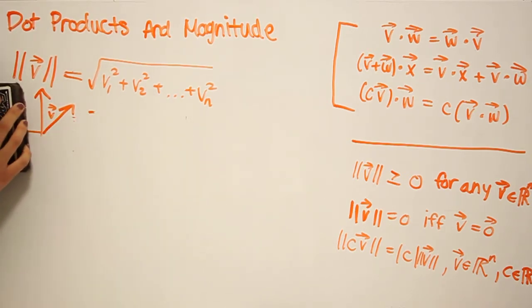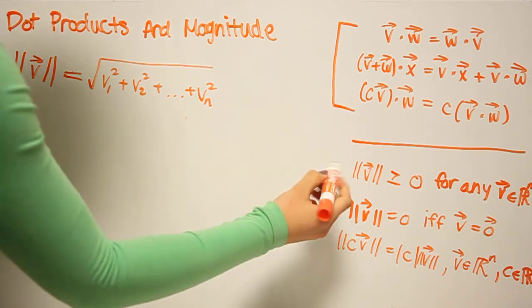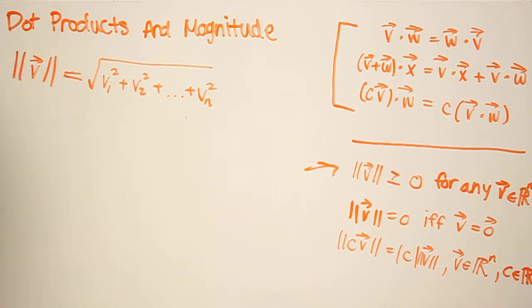Okay, so along with these examples comes three other propositions. So the first one is pretty easy to see. The magnitude of a vector is greater than or equal to zero, so you cannot have negative lengths in geometry. Similarly, you can't have negative magnitudes for vectors. This is for all vectors.